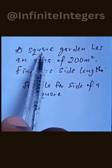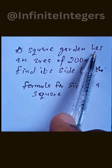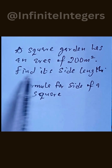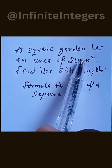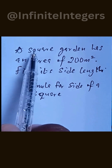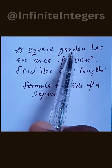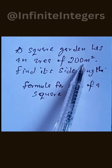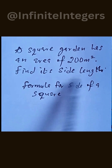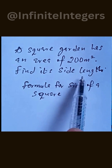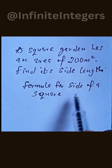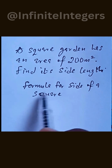We are asked to find the side of a square garden that has an area of 200 meter squared. We are given a square garden with an area of 200 meter squared, and we have to find one side length of that garden. The sides of a square are all equal.